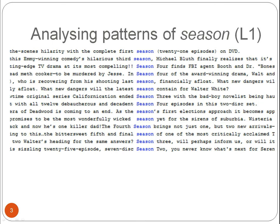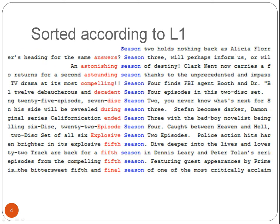So, let's look at an example. These are some concordances for the word form 'season' in a corpus of DVD blurbs — the cover texts on the back of DVDs that advertise a TV series. Here, I use the free software program AntConc for my analysis, and I will only focus on the left-hand co-text, specifically one position to the left of the word form 'season'. The first step is to sort the concordances alphabetically, here according to one word left of the search term, that is, L1. These are some sample concordances from the corpus.